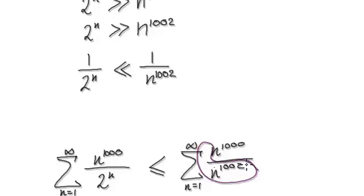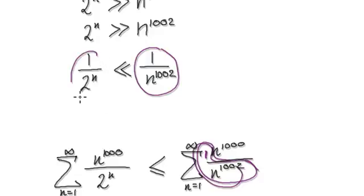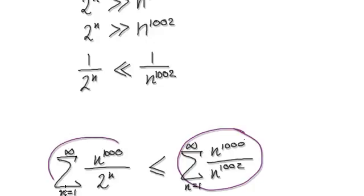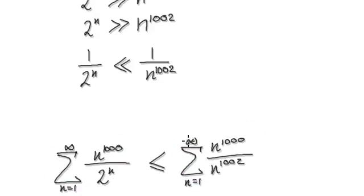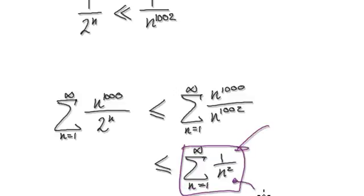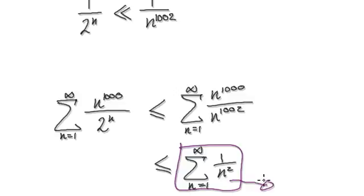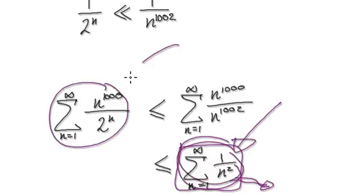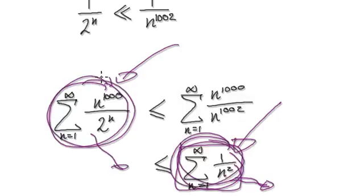Let's go back one step. We know that 1/n^1002 is much, much bigger than our series term as n tends to infinity. That's the reason why I deliberately chose 1,002. If you tidy this up, the comparison series becomes a p-series of the form 1/n^1002, and you should be able to look at this and say it will converge — we've done this many times. So, by the comparison test, if this series is bigger than our original series and this series converges, therefore our original series will also have no choice but to converge.